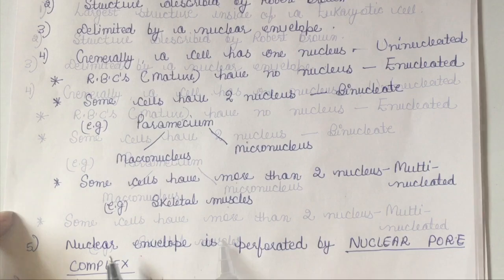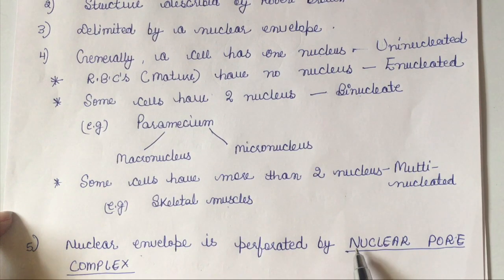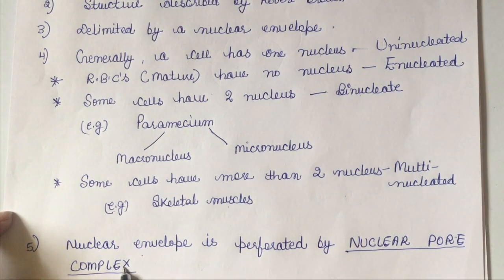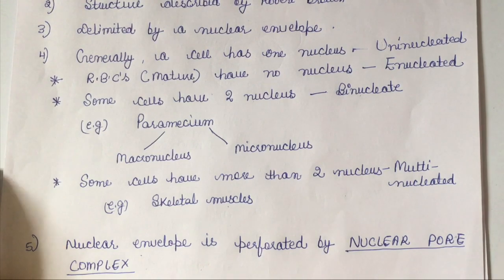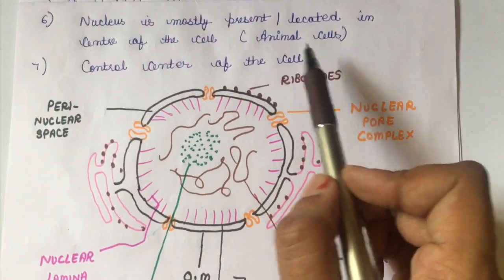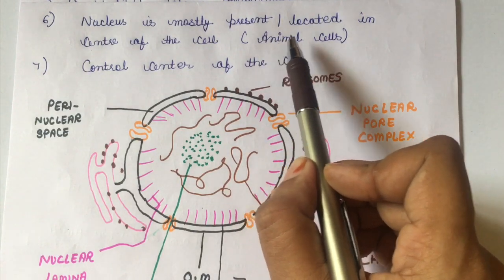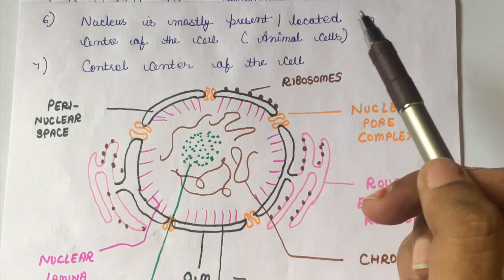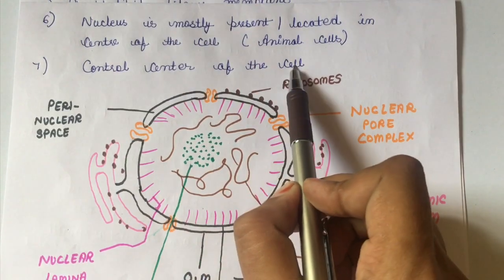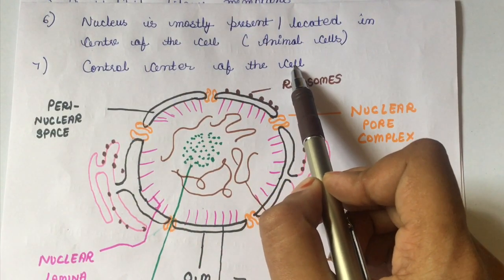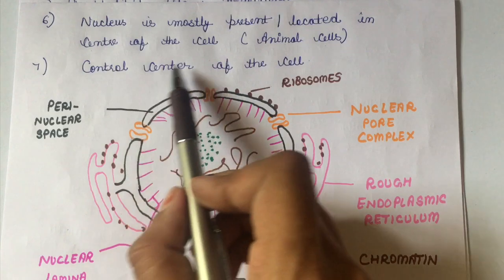For example, skeletal muscles are multinucleated cells. The outer and inner membranes of the nucleus are perforated by pores, and these pores have nuclear pore complexes attached to them with very crucial functions. The nucleus is mostly located in the center of the cell, especially in animal cells, but it can be present anywhere including towards the periphery. It is also called the control center of the cell because it regulates gene expression, DNA replication, ribosome formation, and transcription.